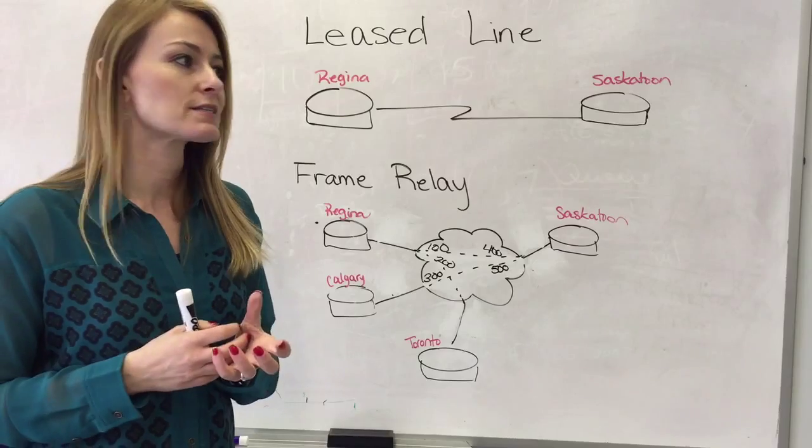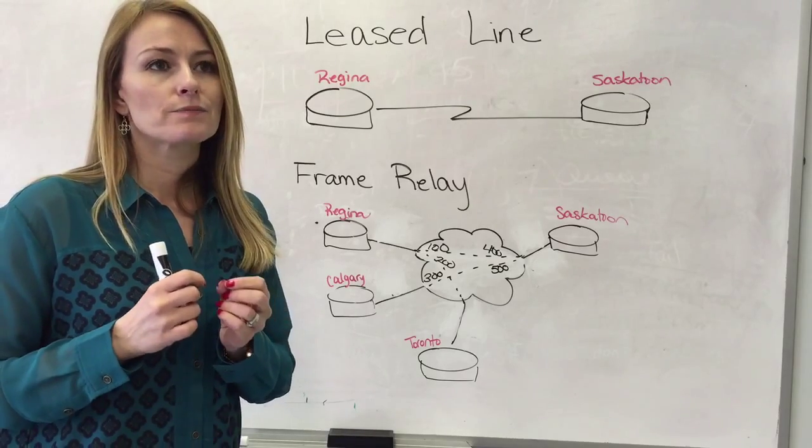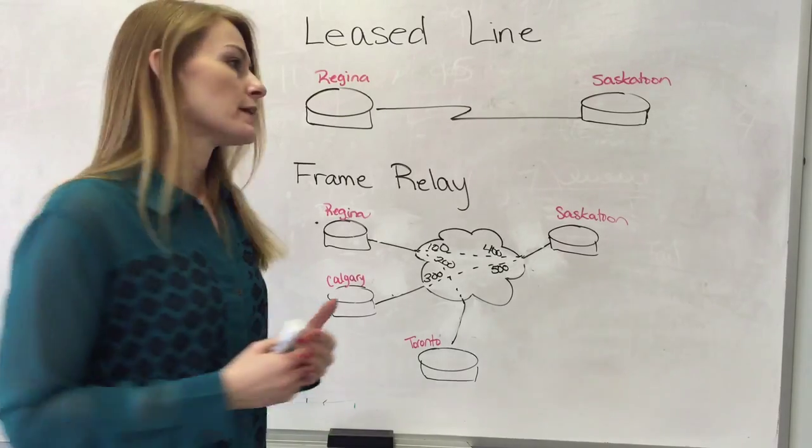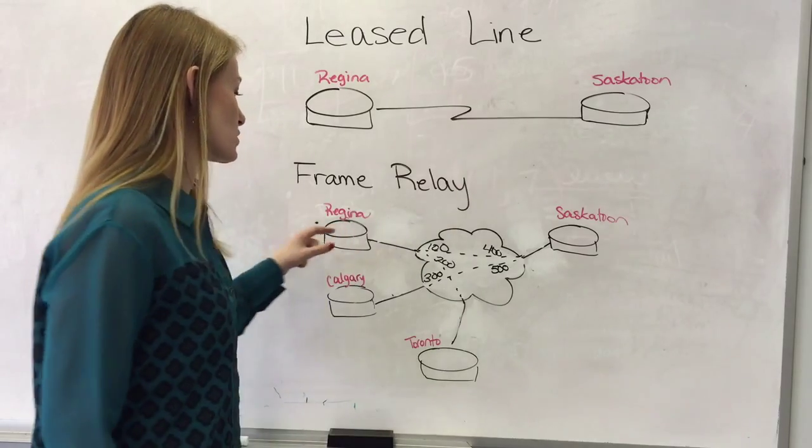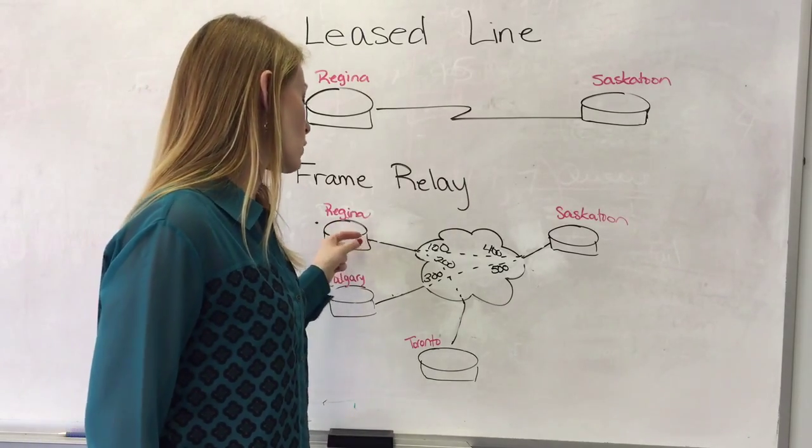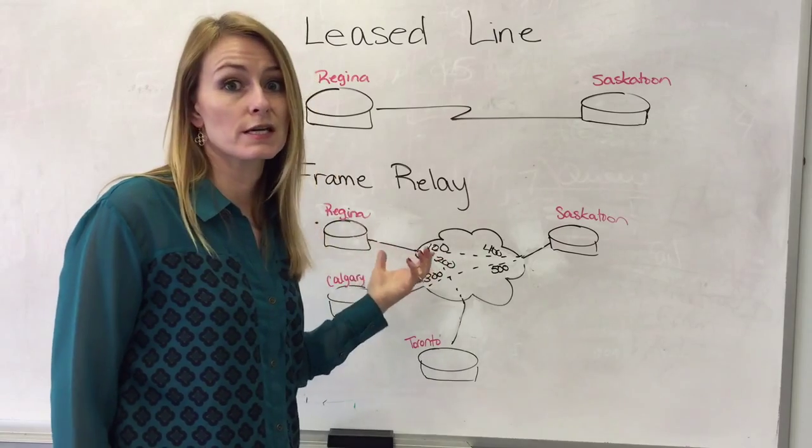So you can think of these DLCIs as exit interfaces. Now from Regina if we want to go to Saskatoon, the packet is going to go through virtual circuit or DLCI 100.